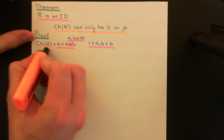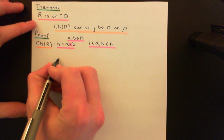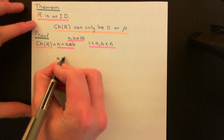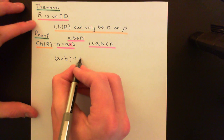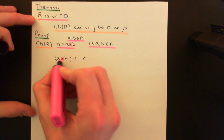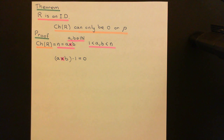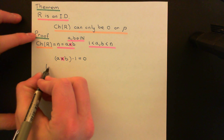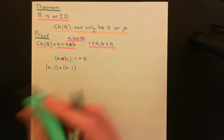Now let's use the notation from the previous video. We consider A times B dot 1. Since A times B = N and N is the characteristic of the ring, we know this equals 0. Using the theorem from the previous video, we can split this as (A dot 1) times (B dot 1) — multiplication in the ring — because A times B dot 1 equals A times B in the natural numbers dot 1.